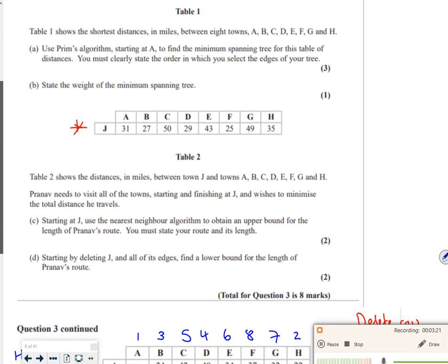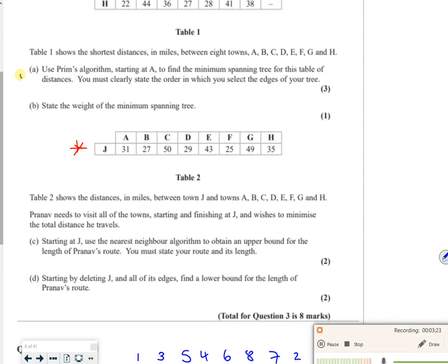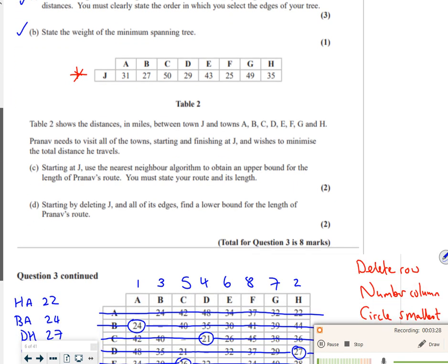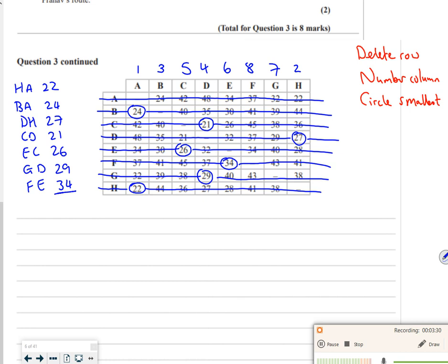So that's my minimum spanning tree done. So part A said to do Prim's. Done that. Clearly state the order in which you selected the edges. Yep, done that. State the weight of it. So if I add these up, it comes to 183. So part B, my minimum spanning tree is 183.